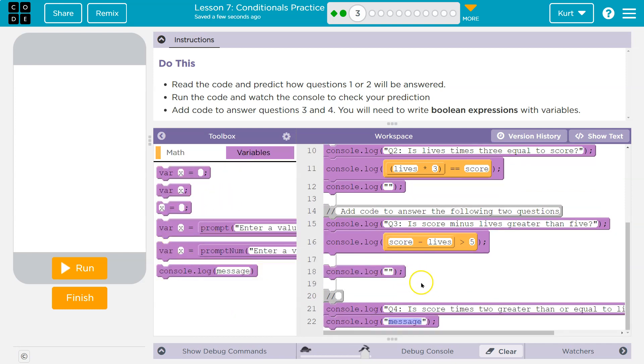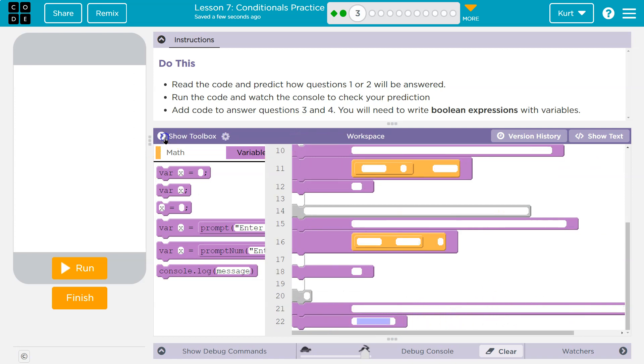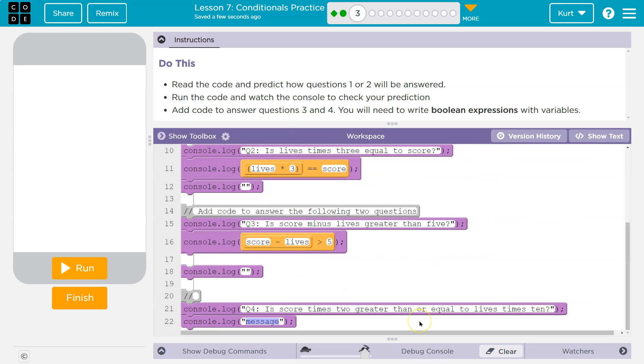And let's try this one. Is score times 2 greater than or equal to lives times 10? Oh, that's a long one. So again, I'm just going to type it. It sometimes will fight you deleting these quote things. You might have to go behind them and then do that. Okay. Is score times 2 greater than or equal to - and that's how I would do that - lives times 10.